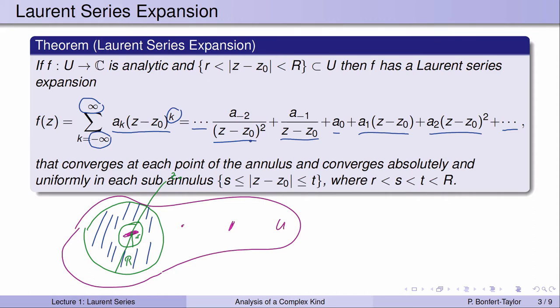If I have a function analytic in an annulus, like the blue region, then in that annulus the function has a series representation called the Laurent series. Not only is the series convergent in that annulus, but if I make the annulus a little smaller — so the two radii are now s and t — then in that subannulus the convergence is in fact absolute and uniform. This is similar to the theorem on Taylor series, where we had locally uniform convergence in the entire disk, and as soon as we stayed away from the boundary the convergence was absolute and uniform.